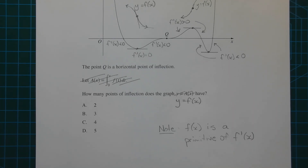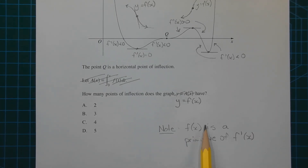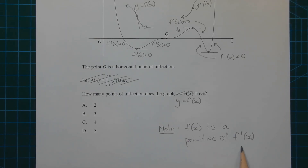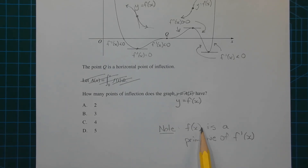As a side note, f of x is a primitive of f dash of x. We differentiate f of x to get f dash of x. But if we're given f dash of x, we integrate f dash of x to get back to f of x.